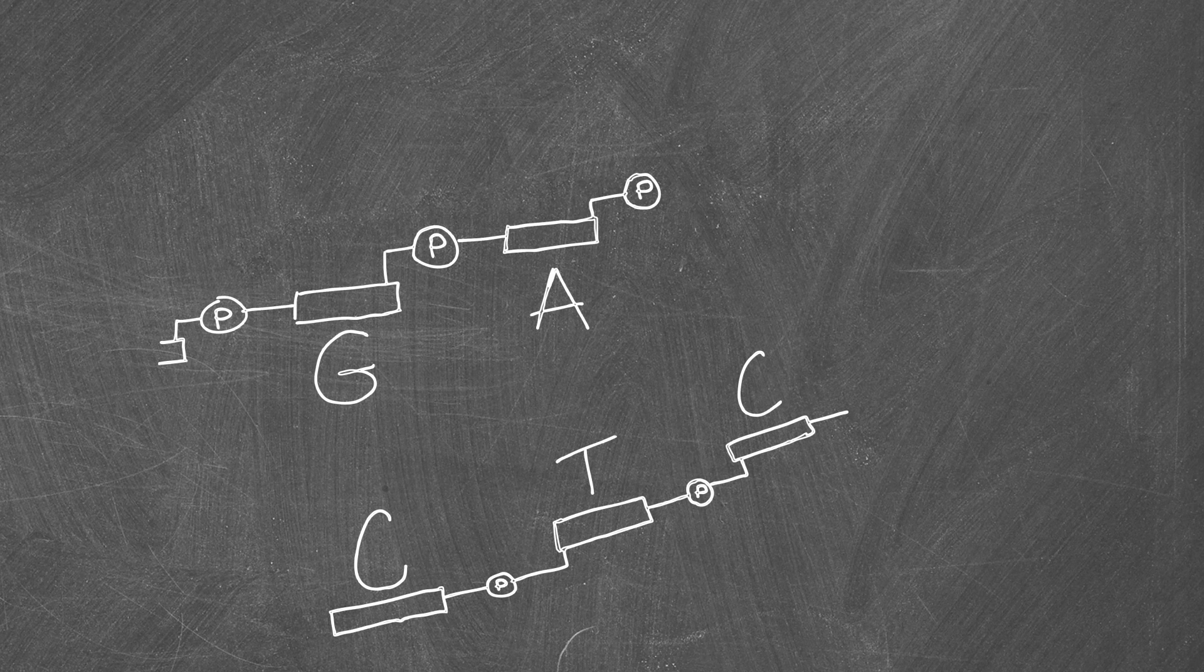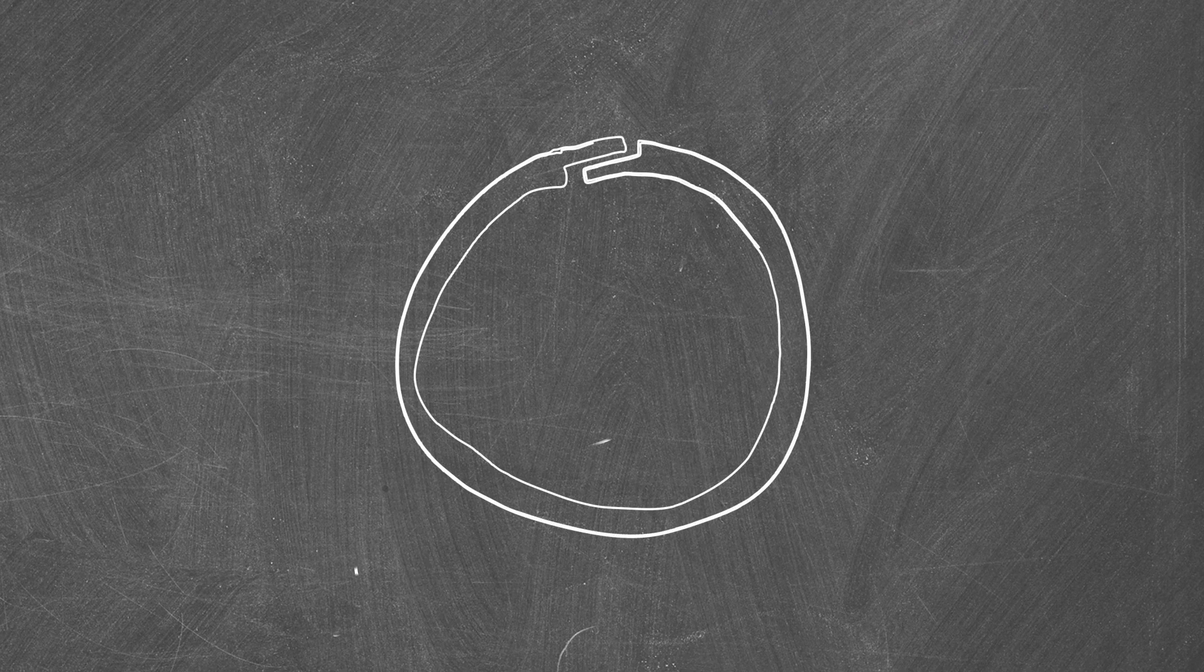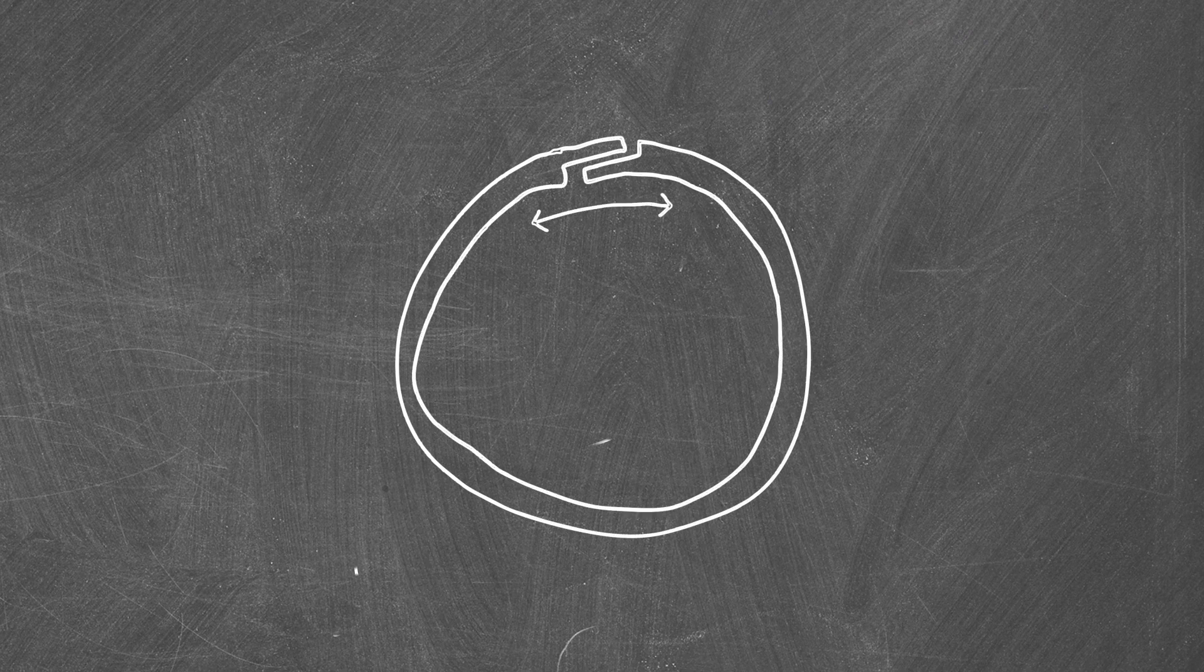If you're only using one enzyme, you might need to use a phosphatase to make sure your recipient plasmid doesn't turn right back into a circle.